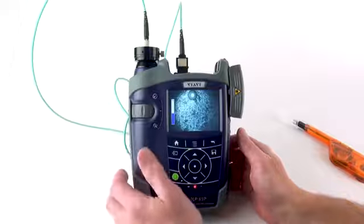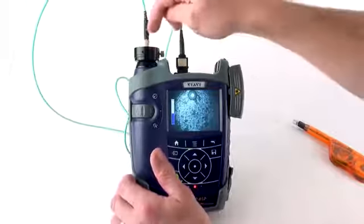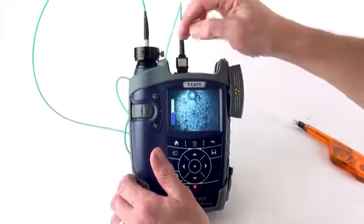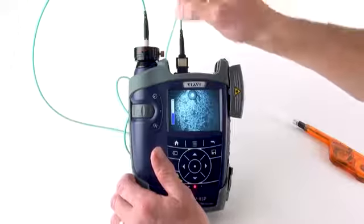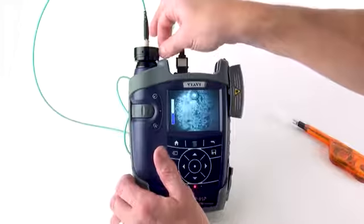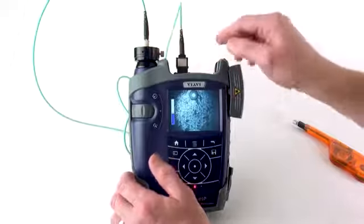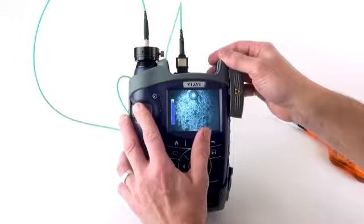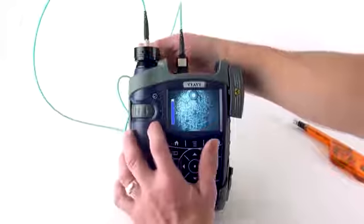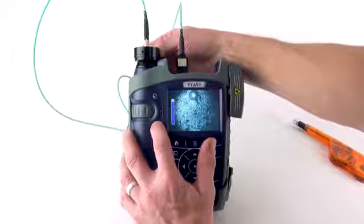The patch cord microscope, because it clicks in, is already lined up on my Y-axis, so I don't have to try to find my fibers. It's already lined up as far as focus is concerned, so I don't have to fiddle with my focus either. In this case, I'm in low magnification.